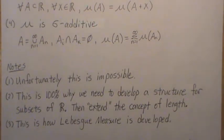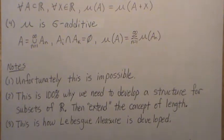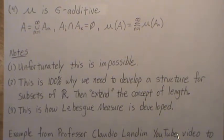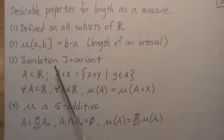Unfortunately, satisfying all four properties simultaneously is impossible — this is exactly why we need to develop a structure for subsets of R. We define measures on simple subsets, say a field of R, and then uniquely extend it to larger sets, like a sigma field and then a complete sigma field. This is actually how Lebesgue measure is developed from length, and we'll get more into this in the next five or six videos.